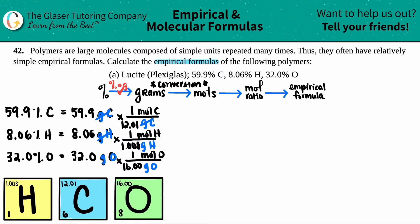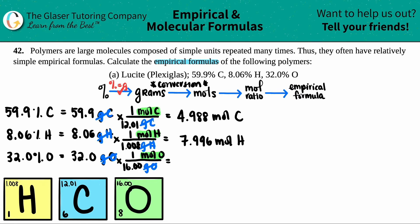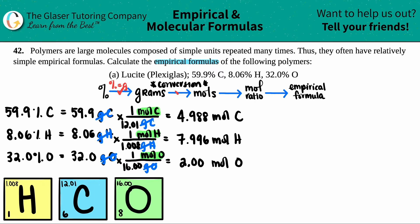Anything in the denominator means division. So: 59.9 ÷ 12.01 = 4.988 moles of carbon; 8.06 ÷ 1.008 = 7.996 moles of hydrogen; and 32 ÷ 16 = 2.00 moles of oxygen. We now have our mole values.